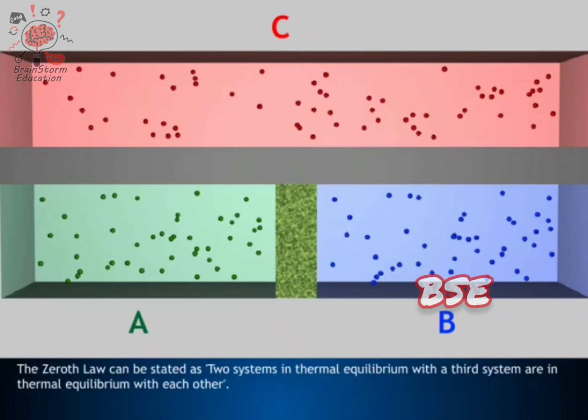The 0th Law can be stated as: two systems in thermal equilibrium with a third system are in thermal equilibrium with each other.